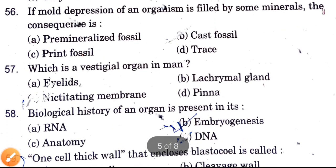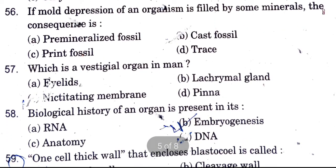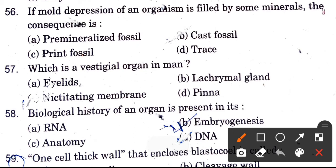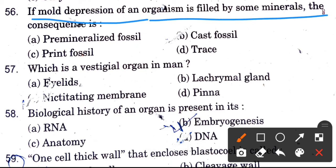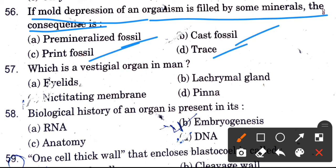Next question: If a mold depression of an organism is filled with some minerals, the result is — options are permineralized fossil, cast fossil, print fossil, and shrest. The answer is cast fossil.